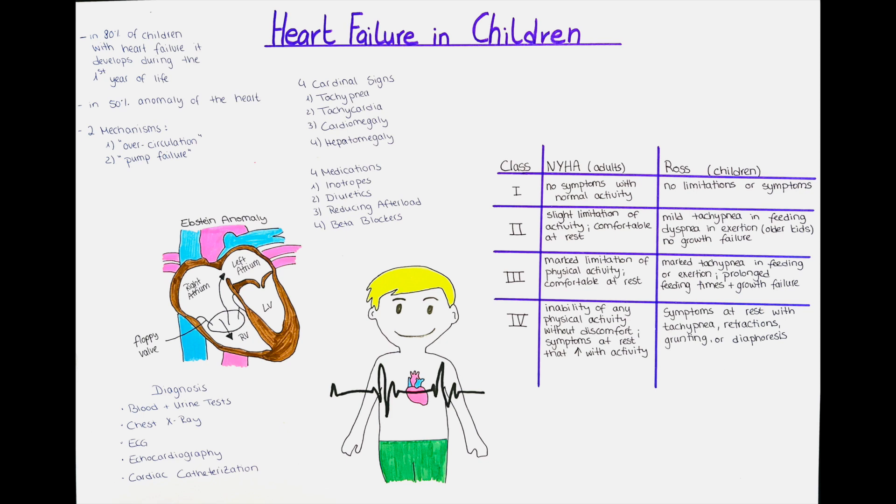This type of heart failure is called high output failure, as the heart is able to contract but not to bring enough oxygen to the tissues. The anomalies are numerous and we will talk about them in a separate video.